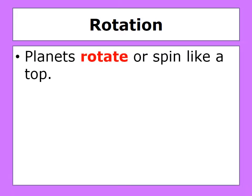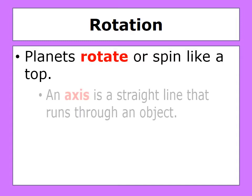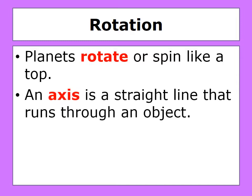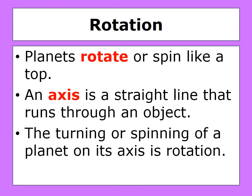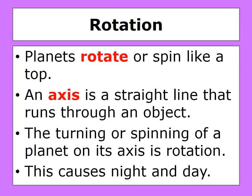Planets rotate or spin like a top. An axis is a straight line that runs through the object. The turning or the spinning of a planet on its axis is called rotation. This causes night and day.